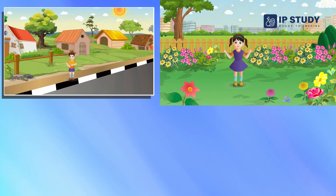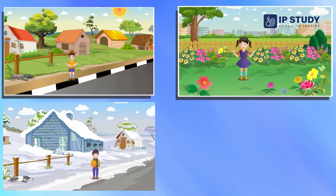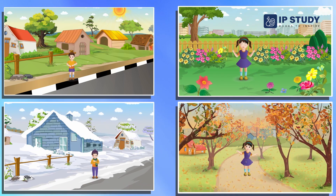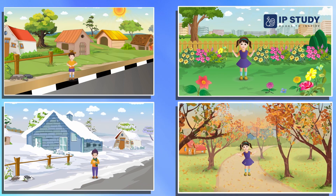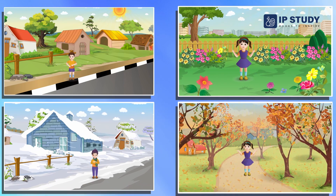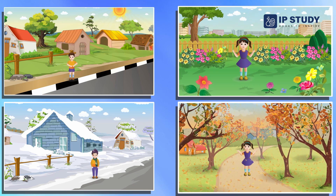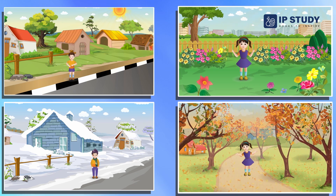The spring season is a time of year when the weather starts to change. Spring is a transition season between the winter and summer seasons.